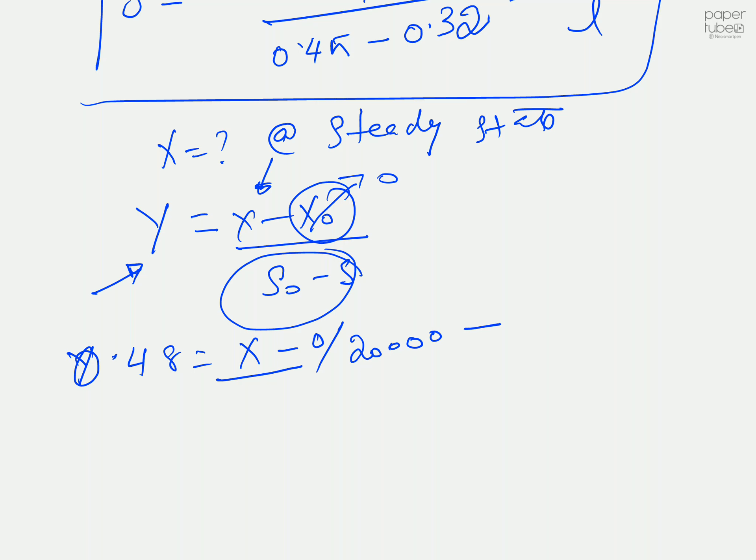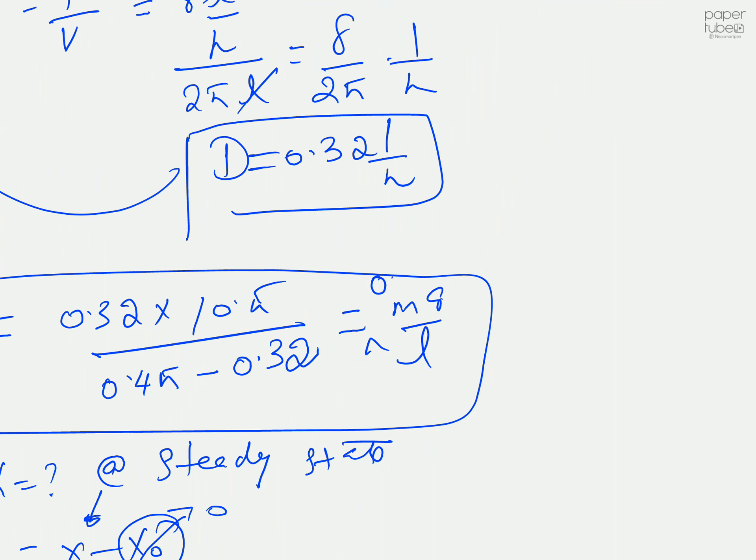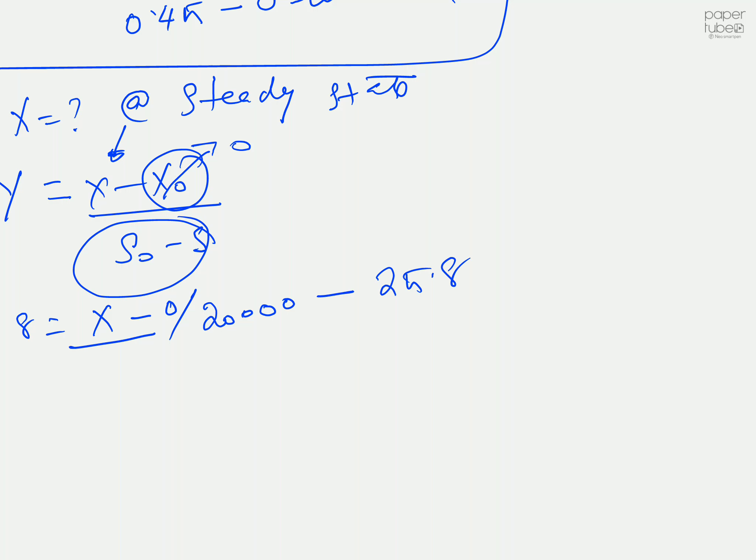The s value is 25.8. If you have this value you can easily calculate. This will be your final substrate concentration because this is at steady state. Your final substrate concentration is 25.8 mg/L, which means you consumed a massive amount of substrate. 2000 minus 25.8, whatever value you get, that will be your microbial concentration at steady state.